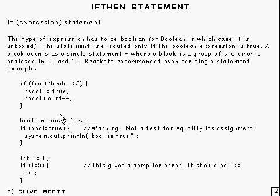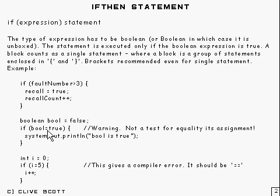Here's something that might occasionally catch people out. We've got boolean equals false, and if boolean equals true, then print out 'boolean is true'. And what happens, of course, is 'boolean is true' is printed out. The reason for that is that this is not a test for equality — it's an assignment taking place here. So you've got to watch out for that. It should be equals-equals if that's most likely what was meant.